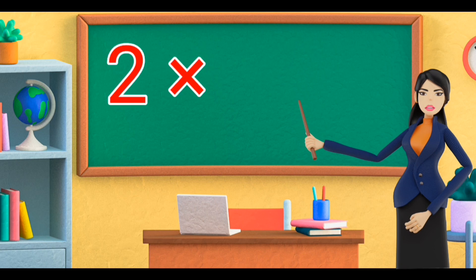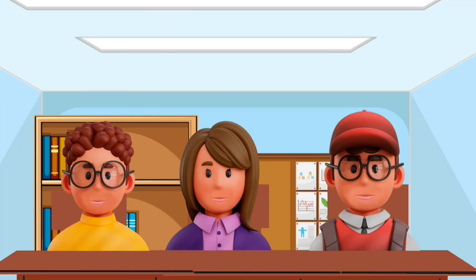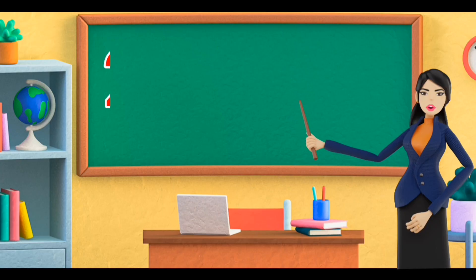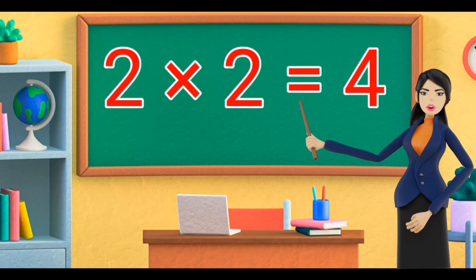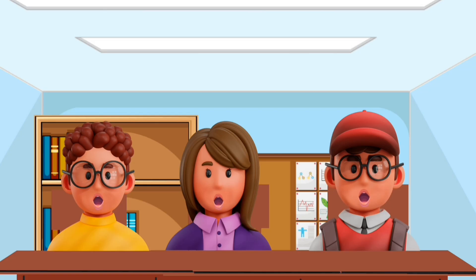Two ones are two. Two ones are two. Two twos are four. Two twos are four.